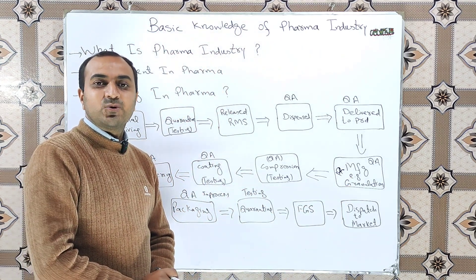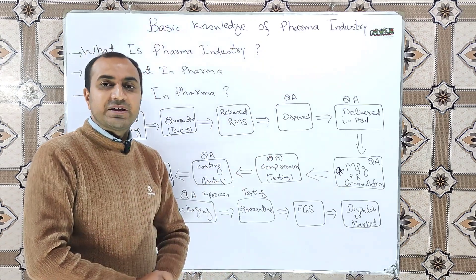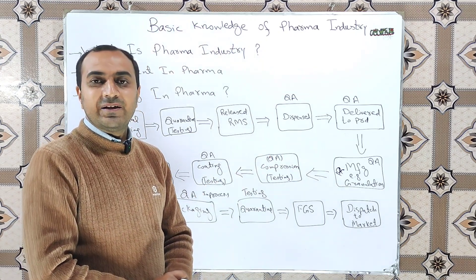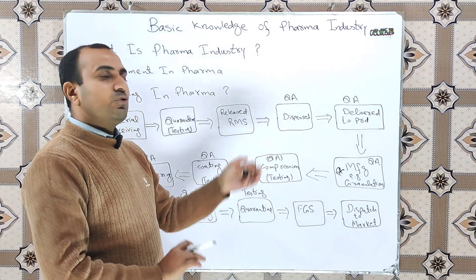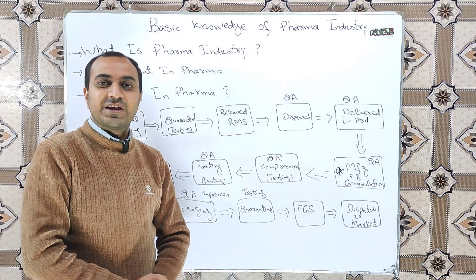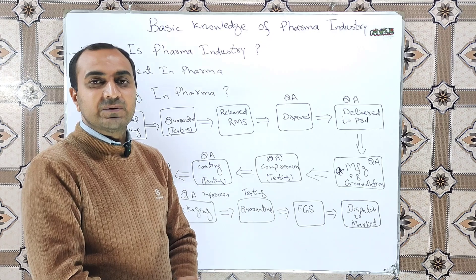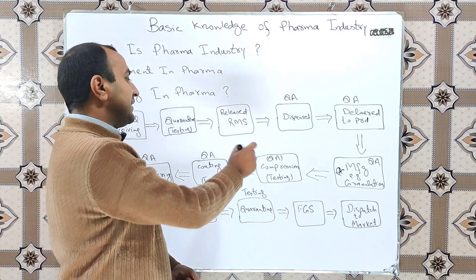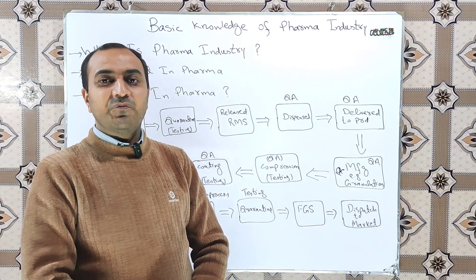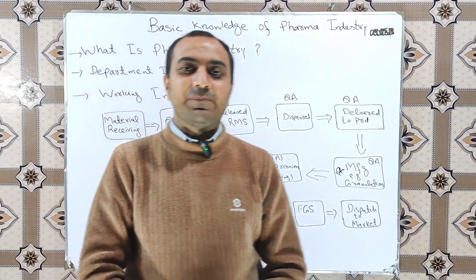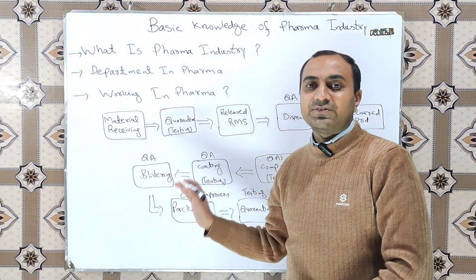After testing and releasing of the blend, it is ready for compression. In compression, the blend, powder, or granules are converted into tablets. QA performs various in-process checks during compression, such as hardness, disintegration, and weight variation. After the completion of the compression process, a sample of the compressed tablets is sent to the quality control department for testing.